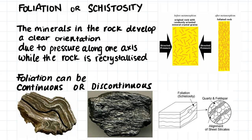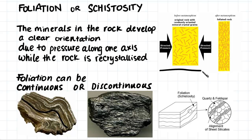Some minerals have a predisposition to form elongated crystals, such as quartz and feldspar. When we apply pressure in one direction, these elongated crystals line up and create our foliation.